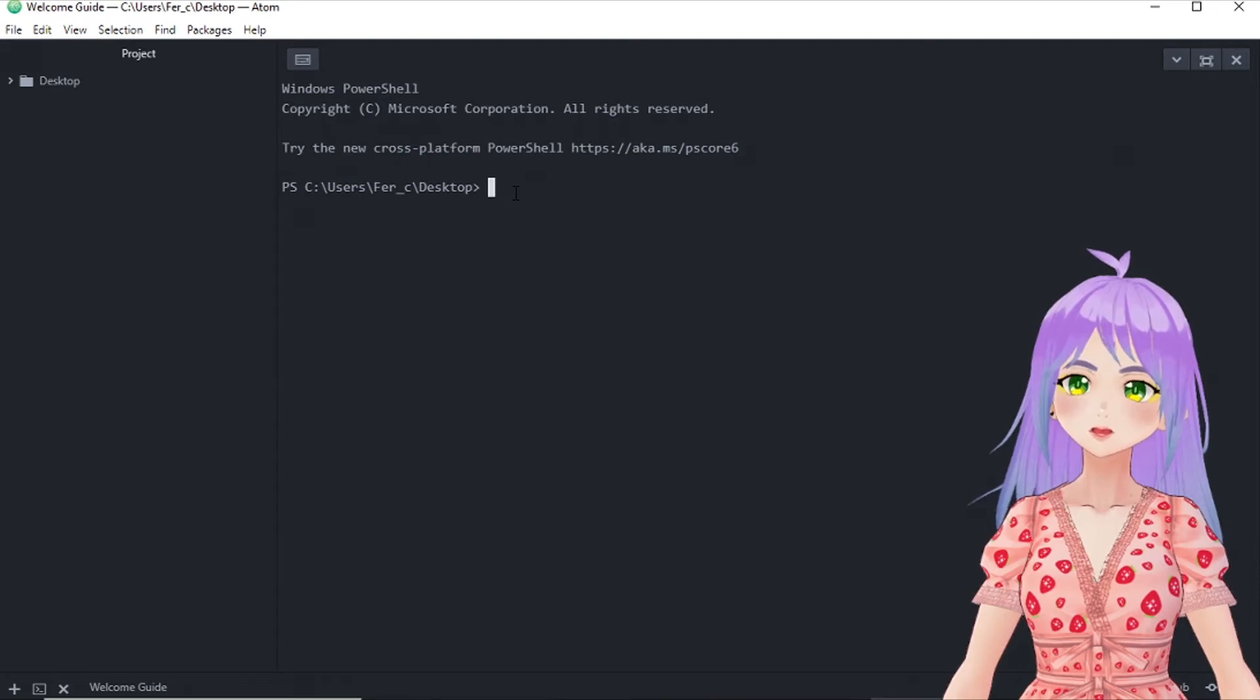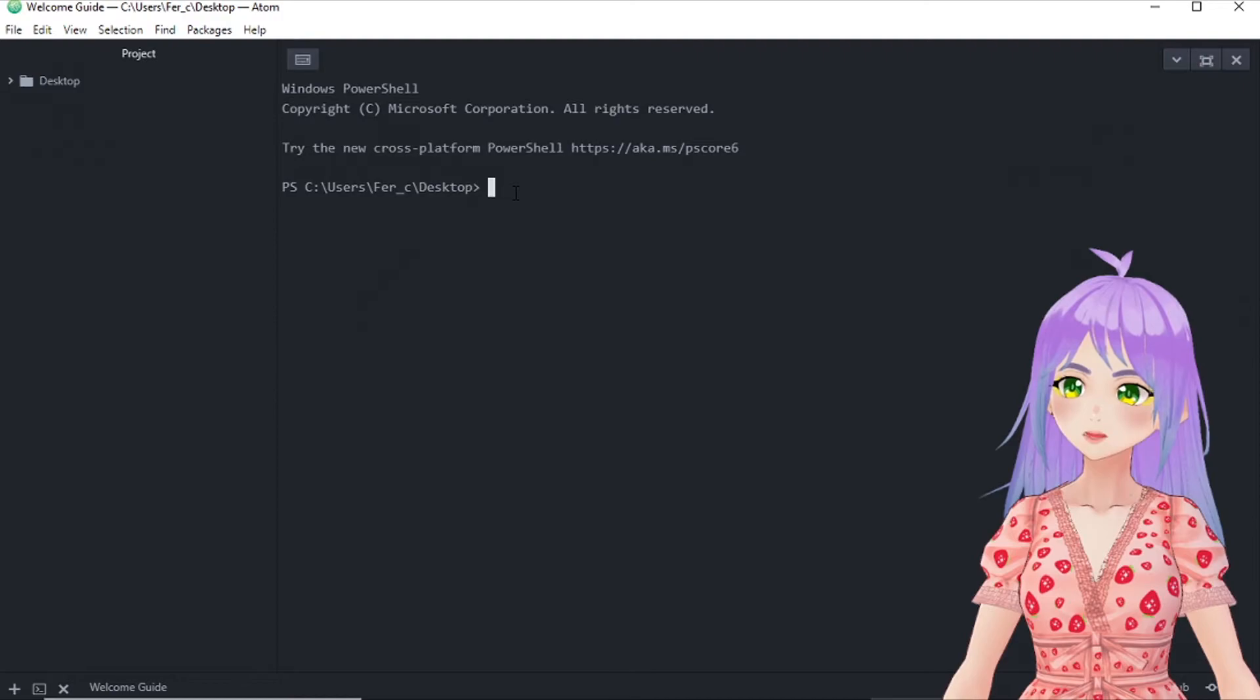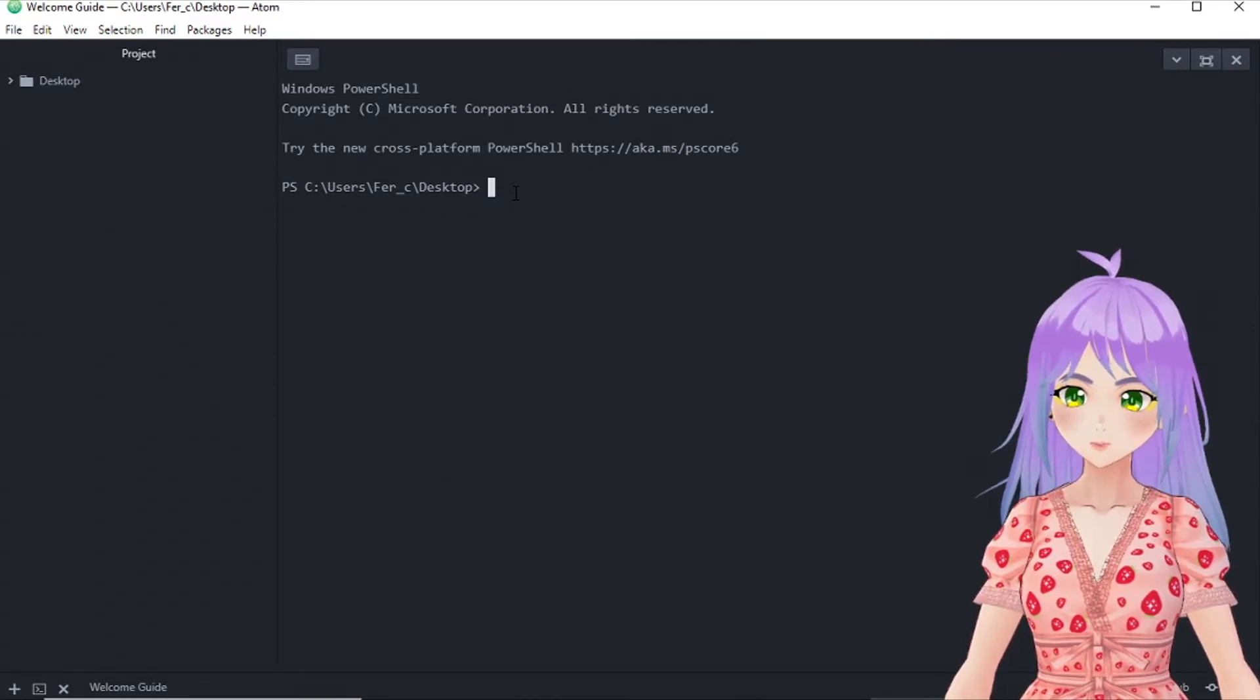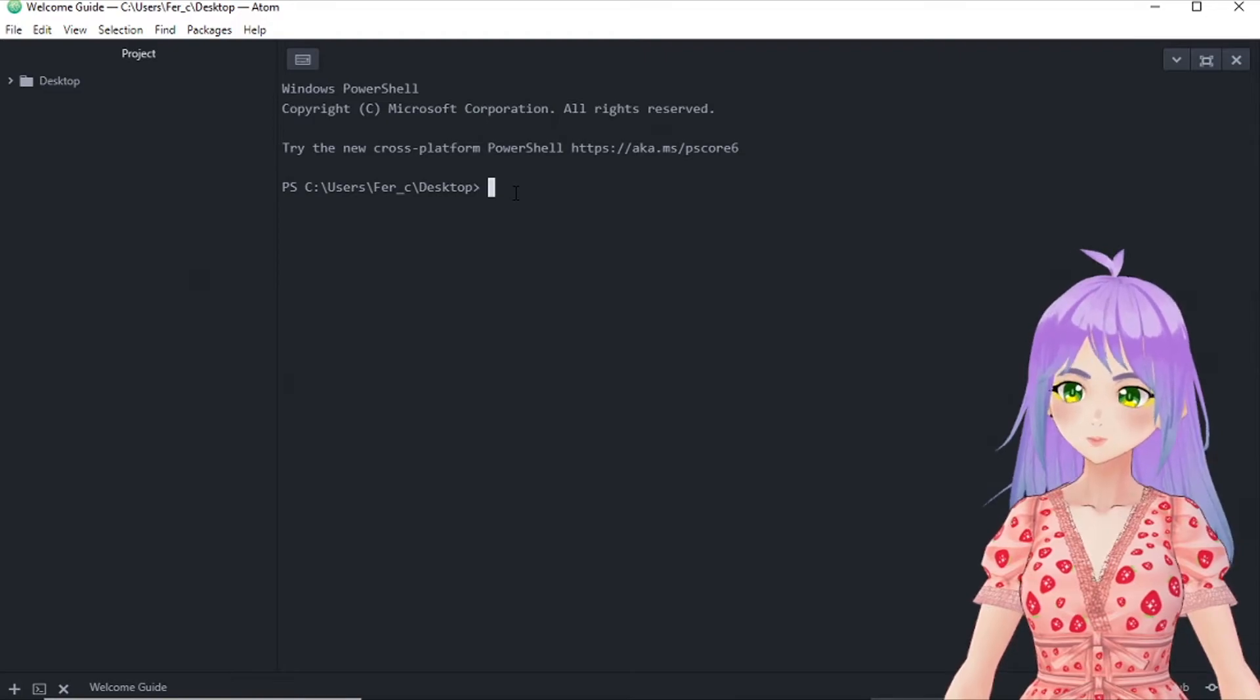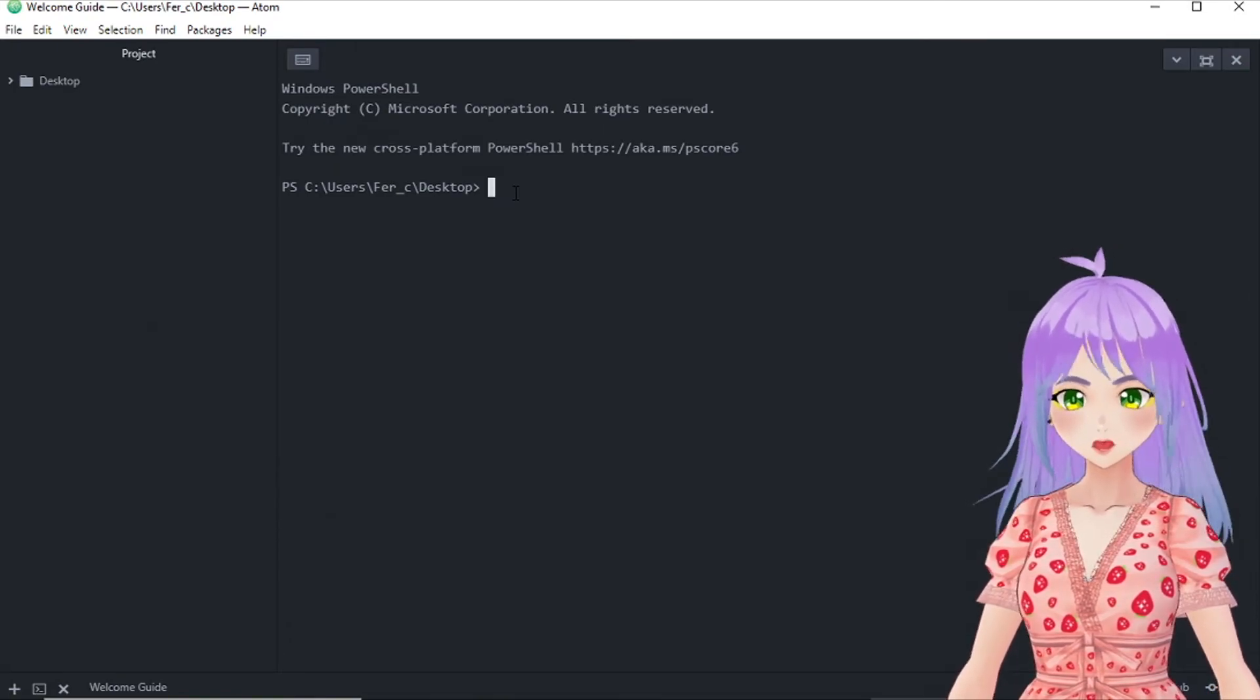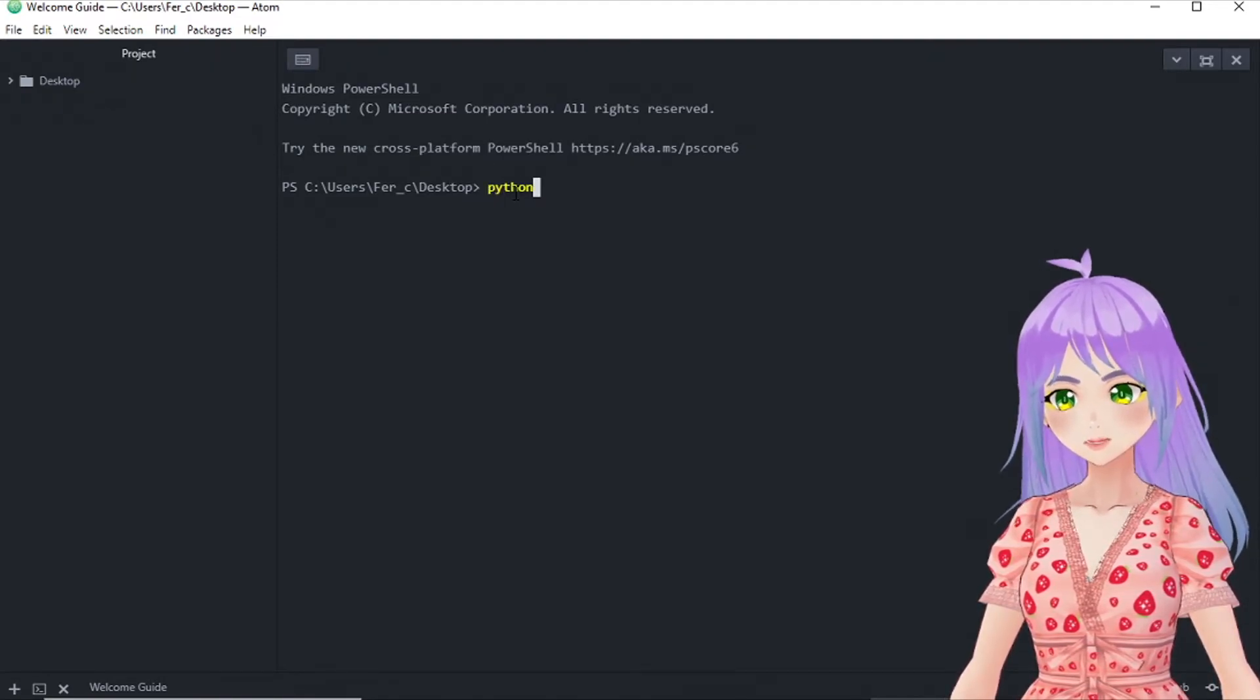Now we are going to see step by step how to use the command type. What we are going to do is go to the terminal of our Atom editor and start from there. If you don't know how to get this terminal into the Atom text editor, please visit my previous video about how to install it and then come back to this video so you can follow this tutorial. So going back to the type command. The first thing that we have to do in order to make our command work is write Python. And then we just press enter.